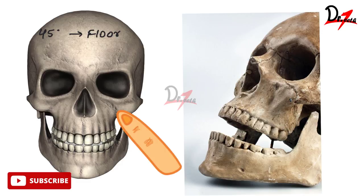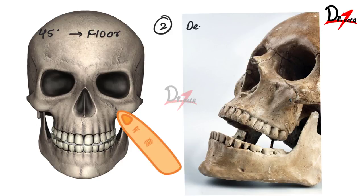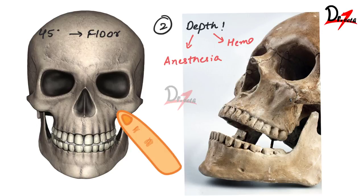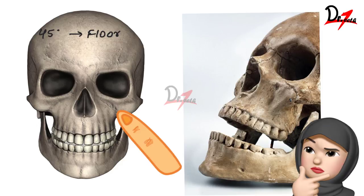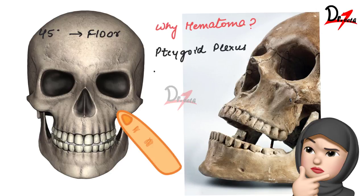Two important points about the PSA nerve block: first, we must control the depth of needle penetration because it affects both the extent of anesthesia and the risk of complications. Over-penetration can lead to hematoma formation. The hematoma occurs because of the pterygoid plexus of veins — the needle inserts into that pterygoid plexus. Also, the maxillary artery may be perforated, though this is rare.